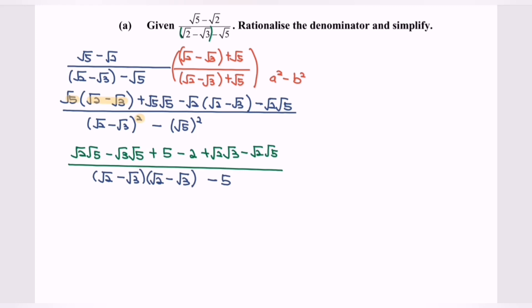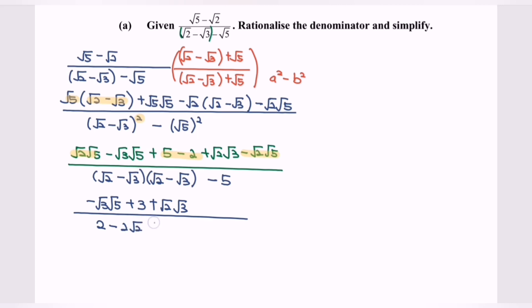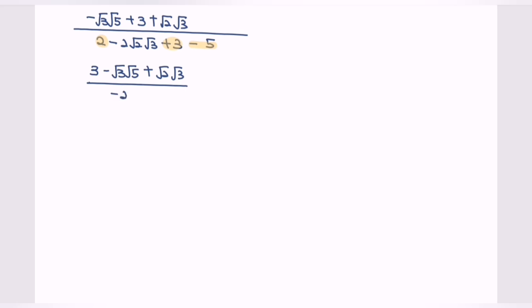Now simplify and expand. We notice that some terms cancel to give 0, and here we will have 3. Rewriting: negative square root of 3 multiplied with square root of 5, plus 3, plus square root of 2 multiplied with square root of 3, over 2 minus 2 minus 2 square root of 2 times square root of 3, plus 3 minus 5. Notice that 2 plus 3 minus 5 equals 0, so we have 3 plus square root of 6, over negative 2 square root of 6.